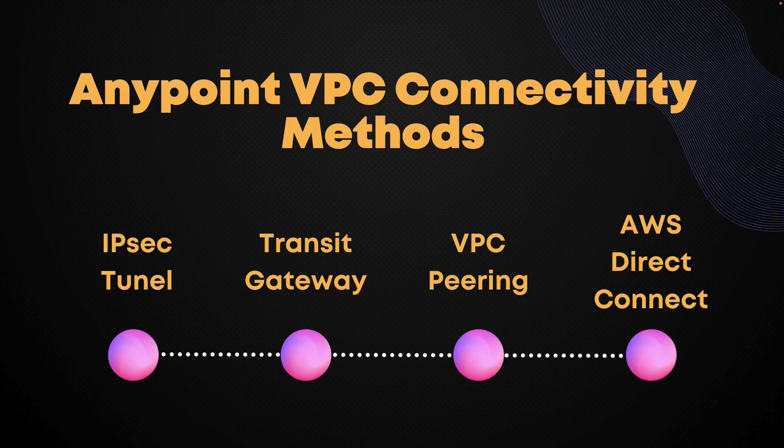Then we have Transit Gateway, which acts as a cloud router in AWS, simplifying network access between VPCs, on-premise data centers, and third-party software while providing increased visibility and control over the network. Transit Gateways effectively merge your organization's cloud resources and on-prem data centers into one network topology.